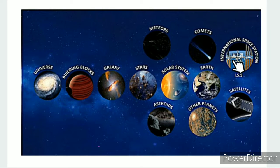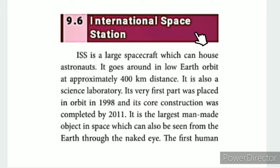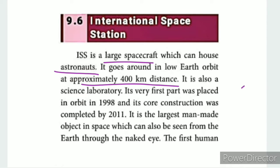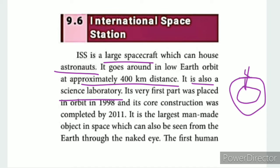The International Space Station is a large spacecraft which can house astronauts. It goes around in low Earth orbit at approximately 400 km distance. It is also a science laboratory.